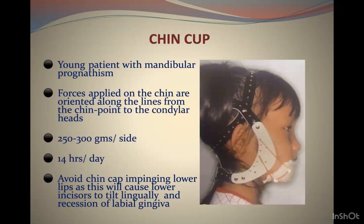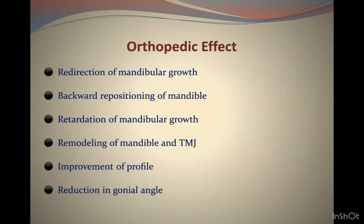The chin cup can be given to young patients with mandibular prognathism. Forces are applied on the chin along the line from the chin point to the condylar head. Around 250 to 300 grams of force per side is needed, and the patient must wear it for at least 14 hours. The chin cap must not impinge the lower lips, as this causes lingual tipping of lower incisors and recession of the lower labial gingiva.